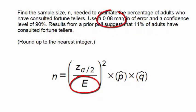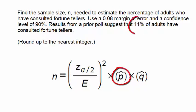In our problem we see that E is 0.08, we see that p hat is 0.11, which is 11 percent as a decimal, and q hat will be 0.89 or 89 percent, 1 minus p hat.